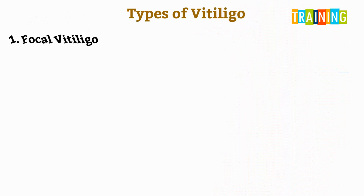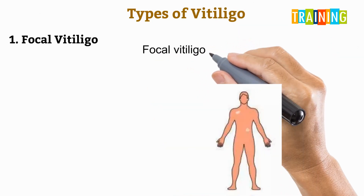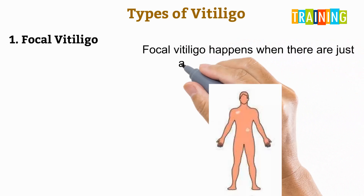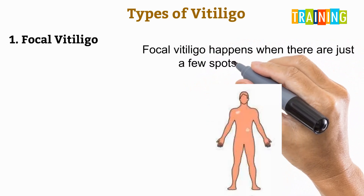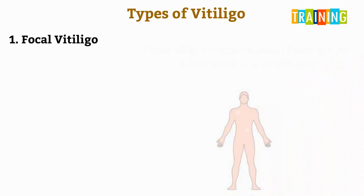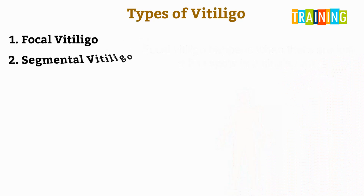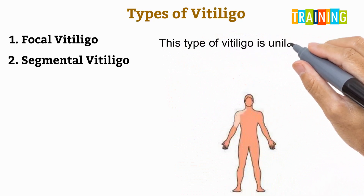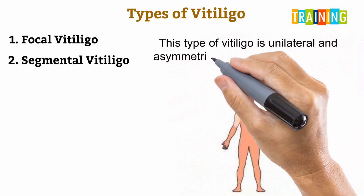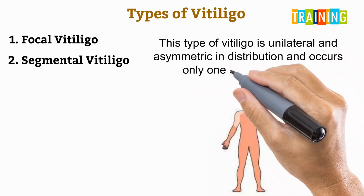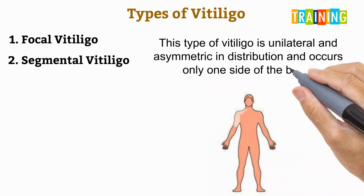Focal vitiligo occurs when there are just a few spots in a single area. Segmental vitiligo is unilateral and asymmetric in distribution, occurring only on one side of the body.